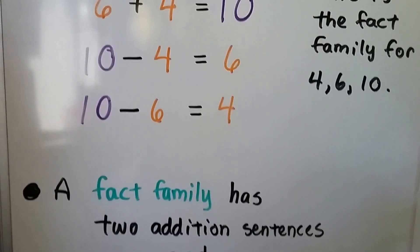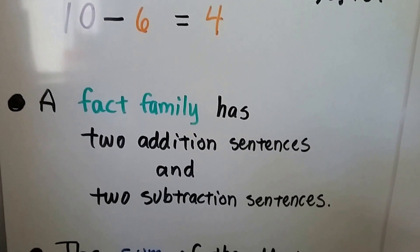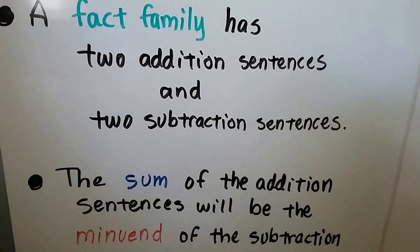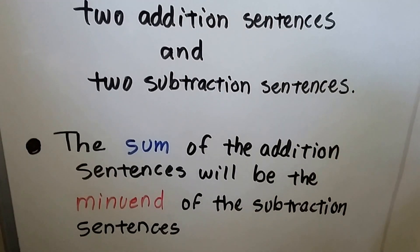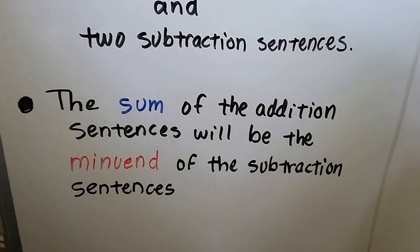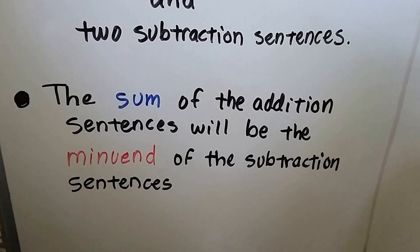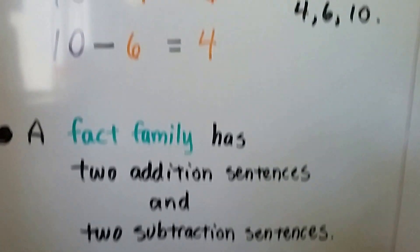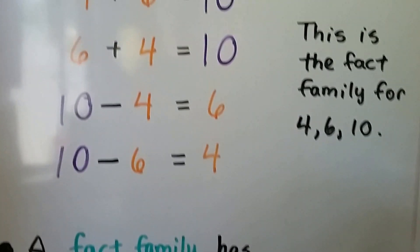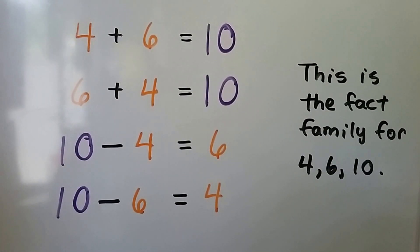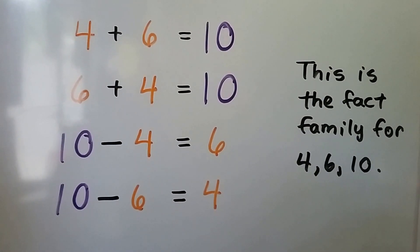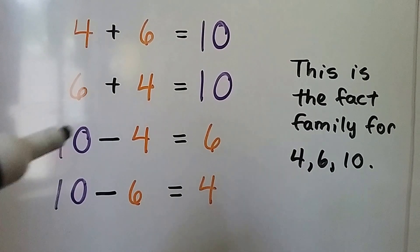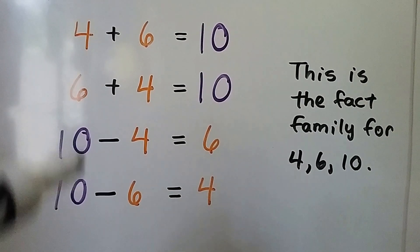A fact family has two addition sentences and two subtraction sentences. The sum of the addition sentence will be the minuend of the subtraction sentence. So if we look at this fact family, the sum of the addition sentence is 10, and that's the minuend of the subtraction sentence.